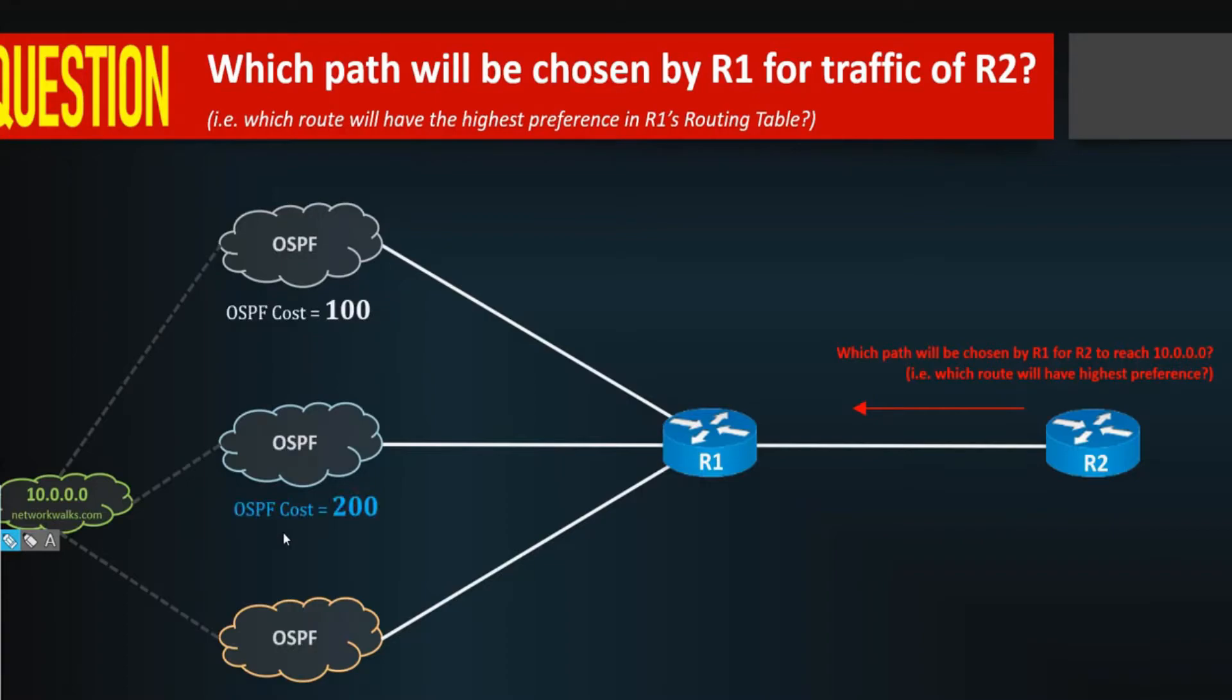The second priority will always be given to the admin distance, like what you are thinking. So this router has three paths. Again, this is the second example. Path number one, path two, and path three. One, two, and three. The first one is being learned via RIP, so RIP means the admin distance is 120. OSPF means admin distance is 110, and BGP means the admin distance is 200. So which path will be chosen?